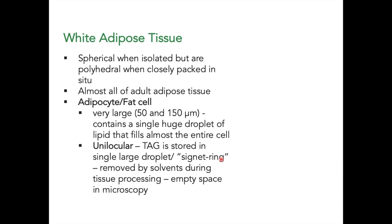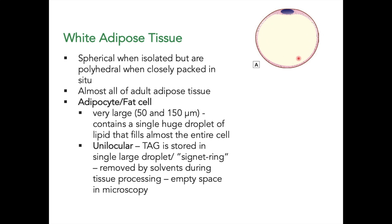White adipose tissue fat cells are spherical when isolated but are polyhedral when closely packed. There is a huge lipid droplet that fills the entire cell and pushes the nucleus to the side, reminiscent of a signet ring.